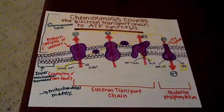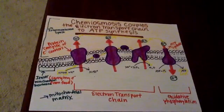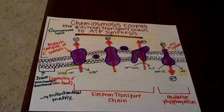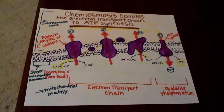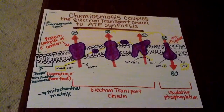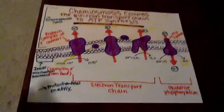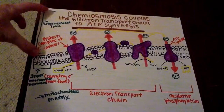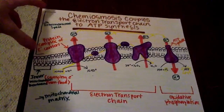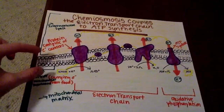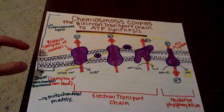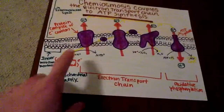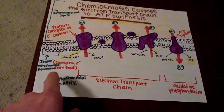This is a picture of how chemiosmosis couples the electron transport chain to ATP synthesis. To summarize the picture: this area right here is the intermembrane space, this right here is the inner mitochondrial membrane, and the area all down here is the mitochondrial matrix.